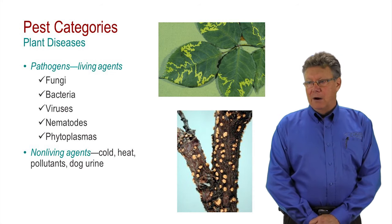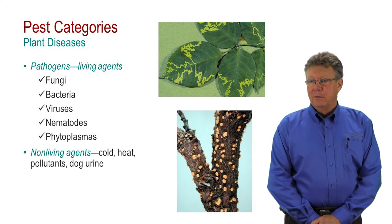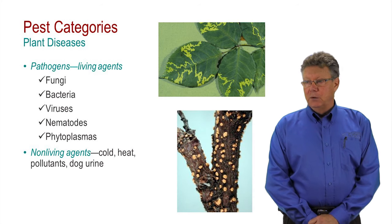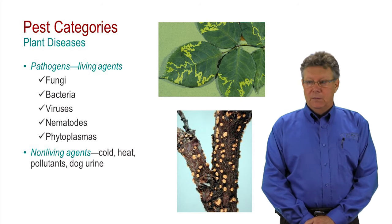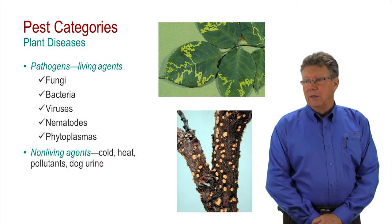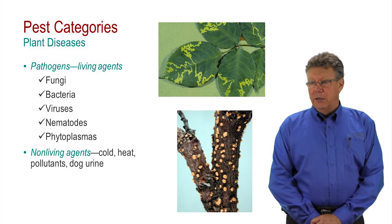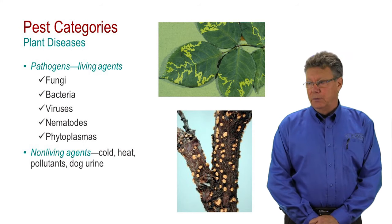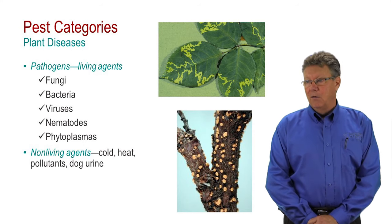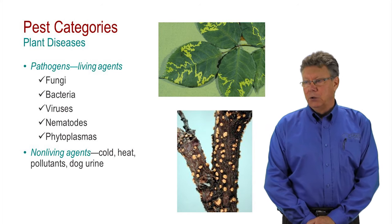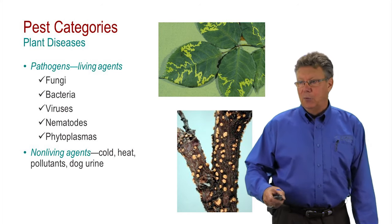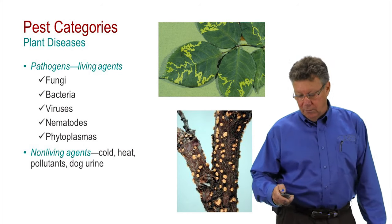Rose mosaic virus symptoms are pictured at the top. The bottom image shows fruiting bodies of the fungus that causes nectria or twig blight in some fruit and ornamental tree species. It's important to remember that non-living agents, including temperature extremes, air pollution, and a lack of or excessive levels of nutrients, can also cause damage to desirable plants, resulting in plant disease.